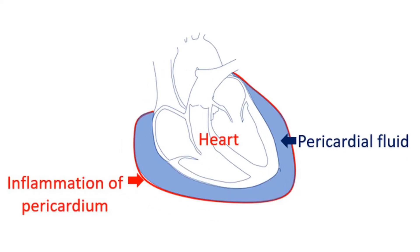Infections of the pericardium like tuberculosis can also cause cardiac tamponade sometimes. Bacterial infection of heart valves spreading to the pericardium can cause pus in the pericardial cavity. Infections may also be associated with bleeding into the pericardial cavity.